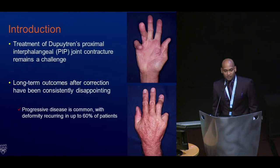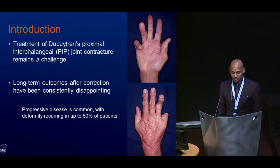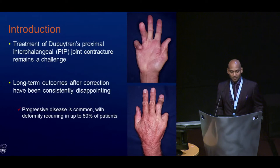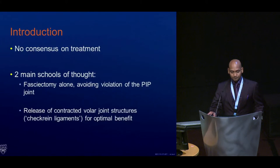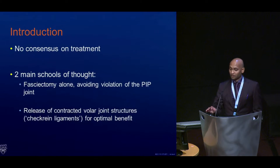The treatment of Dupuytren's PIP joint contractures has, as we've all recognized, become quite a challenge. There's no real consensus on how to treat this, and we've accepted that there are alternative modalities we could employ — we just need to find the proper indications. There are two main schools of thought: fasciotomy alone, which avoids violating the anatomical structures of the PIP joint, and releasing the contracted volar joint structures, which are the check rein ligaments.